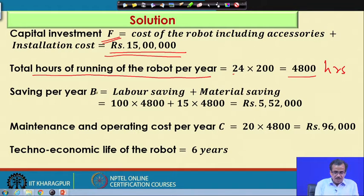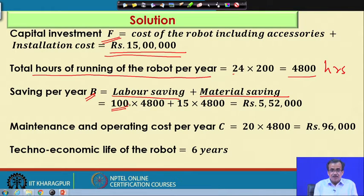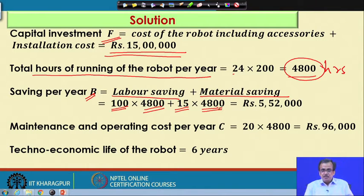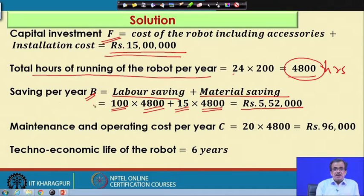Now, saving per year, denoted by B, is the labour saving and the material saving. The labour saving is rupees 100 per hour. So, rupees 100 multiplied by 4800 total number of hours, plus the material saving rupees 15 per hour multiplied by the total number of hours 4800. If you add them up, we will be getting rupees 5,52,000. So, this is nothing but the total saving per year by using this particular robot.